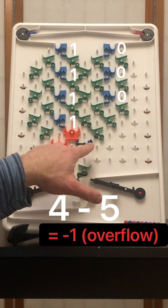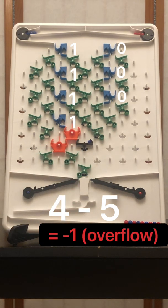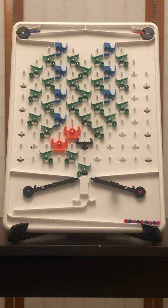And there we have a blue ball trapped, which means that this is a negative. That concludes the Turing Tumble subtraction demonstration.